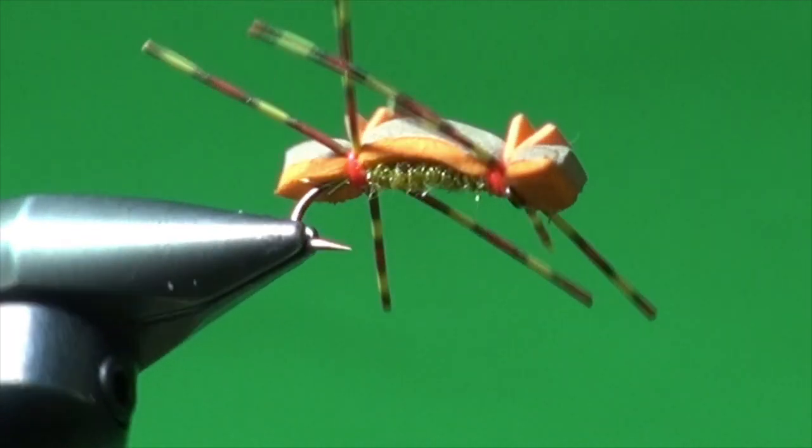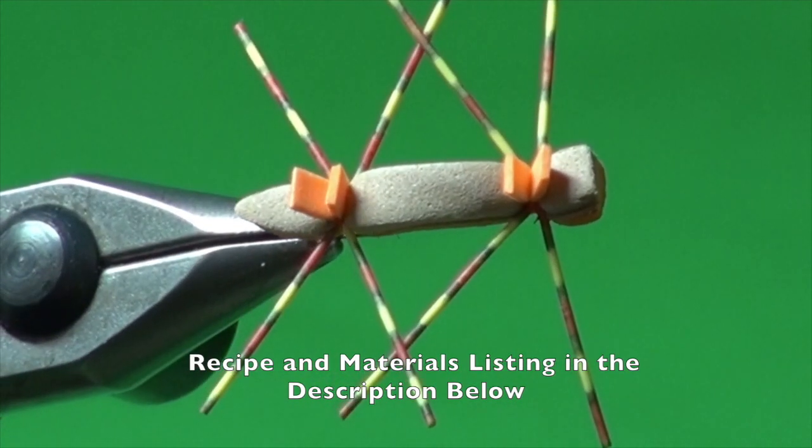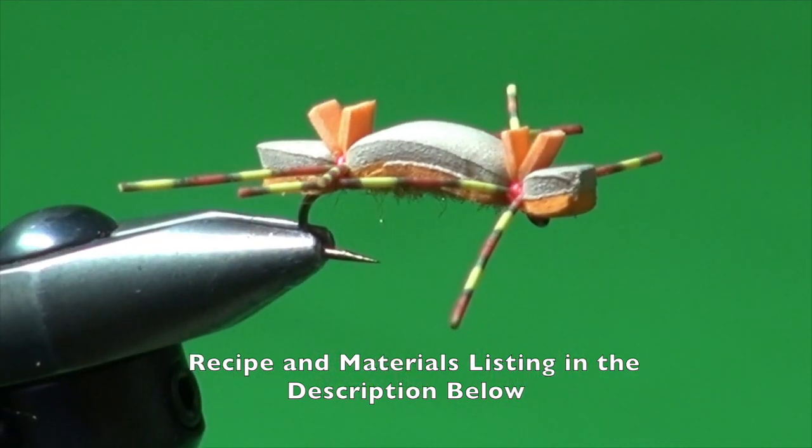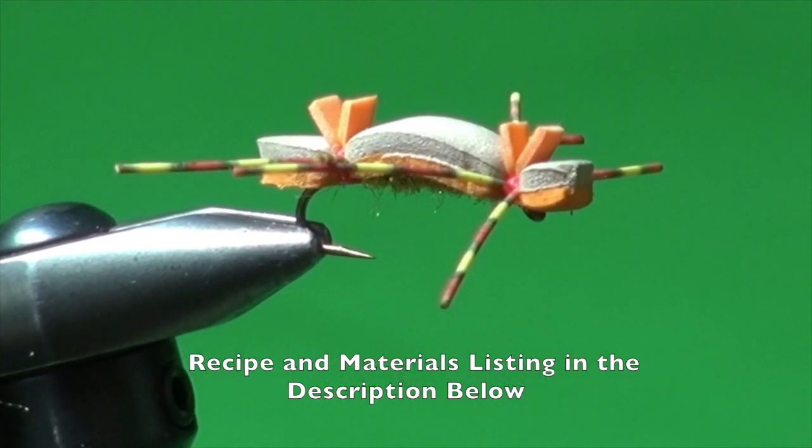And there you have a finished Orange Crush. Simple and deadly for cutthroat or any other fish you want to come up to the surface and eat an attractor.